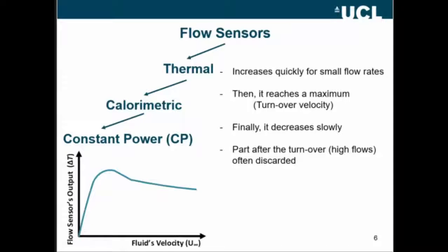Then it reaches a maximum output, usually called turnover velocity, and then it starts decreasing slowly. This part, the last part, usually because of its low sensitivity, is usually discarded.